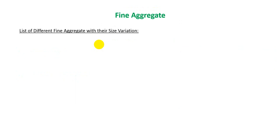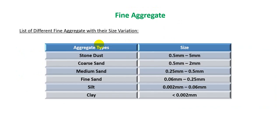If we discuss fine aggregate, here is the list of different fine aggregates with their size and variation. The aggregate types and sizes are as follows: stone dust has a size of 0.5 mm to 5 mm, and coarse sand has a size of 0.5 mm to 2 mm.